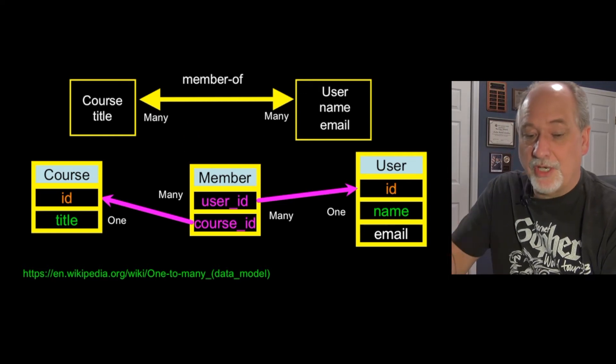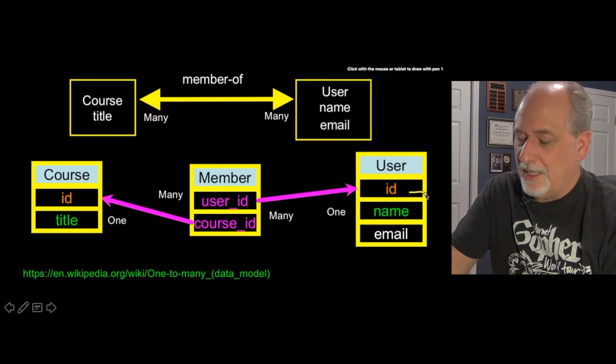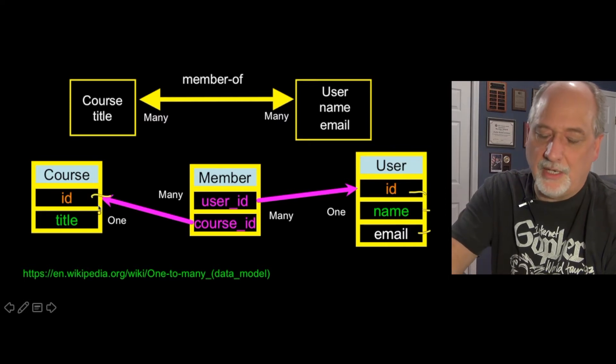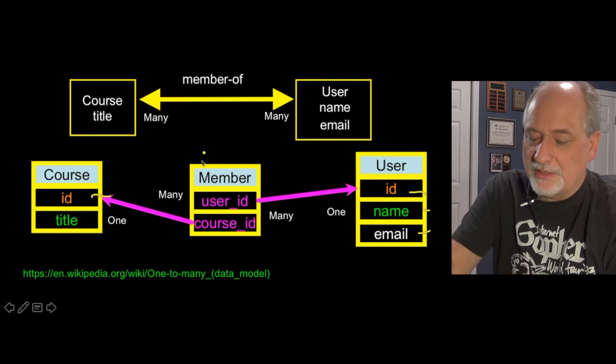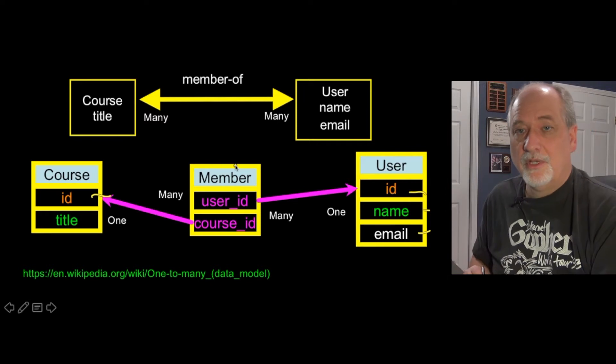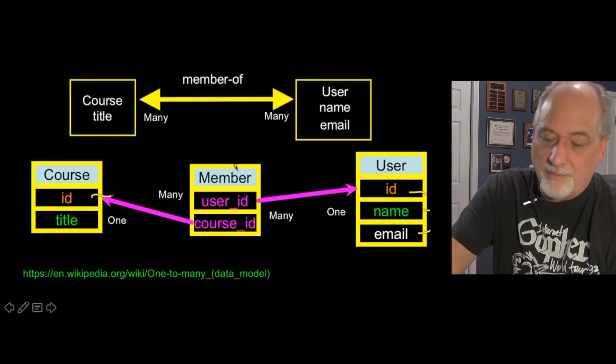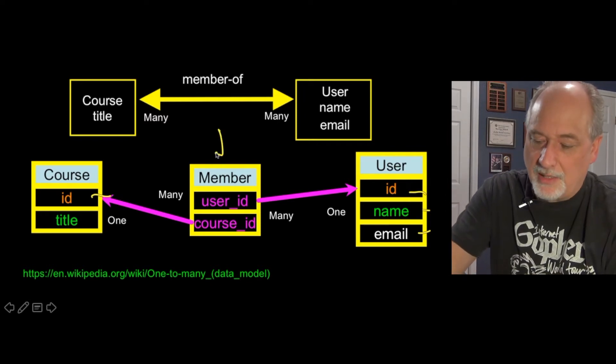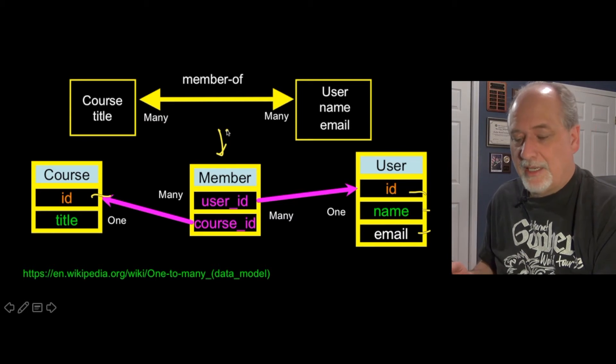If you imagine a course table and a user table, there's a user ID, the name and email, and the course has a title and an ID. Then we have this little connector table that shows the points out. We can expand this membership. Let's take a look at how that works.